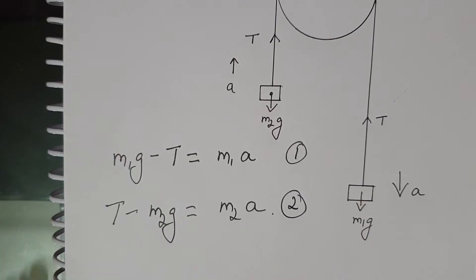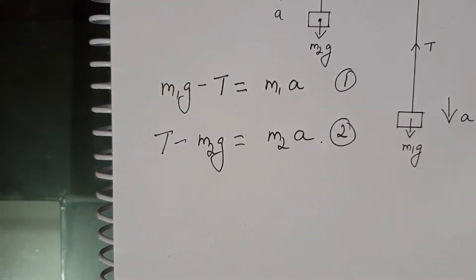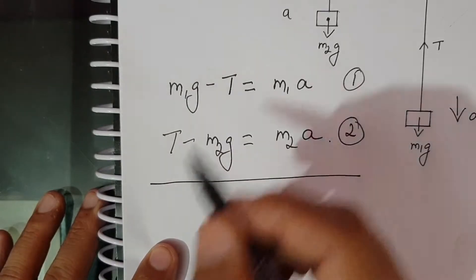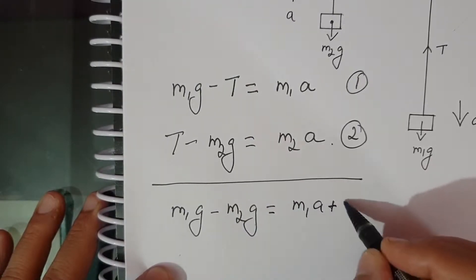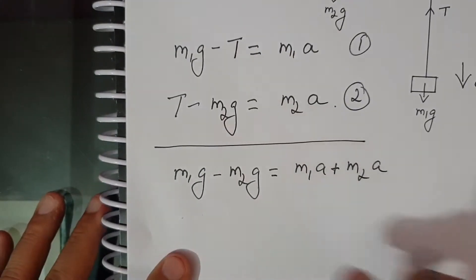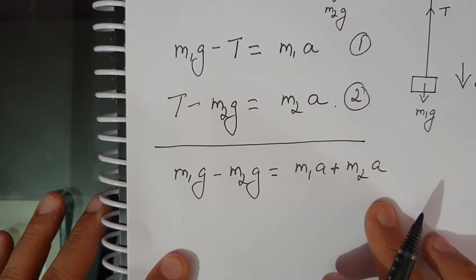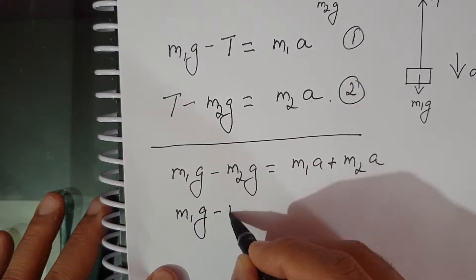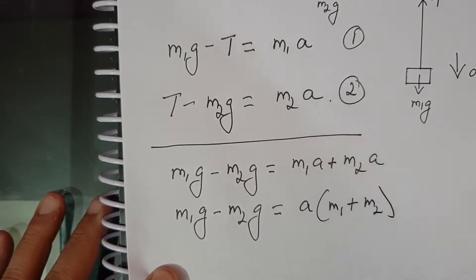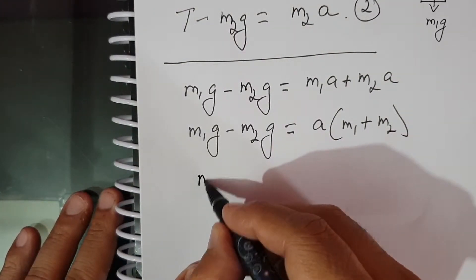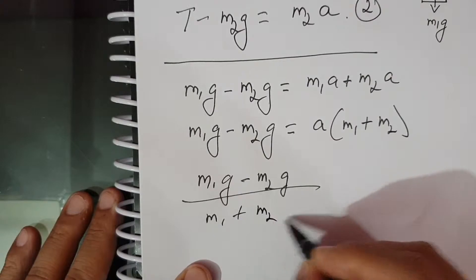Adding Equation 1 and Equation 2 eliminates T, giving: M1G − M2G = M1A + M2A. Taking A common on the right side: M1G − M2G = (M1 + M2)A. Therefore, the acceleration A = (M1 − M2)G / (M1 + M2).